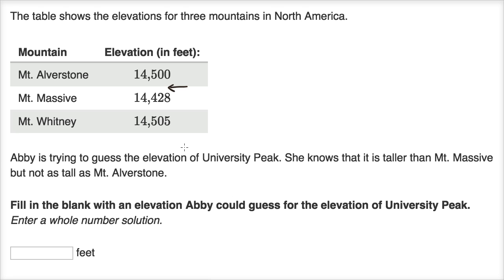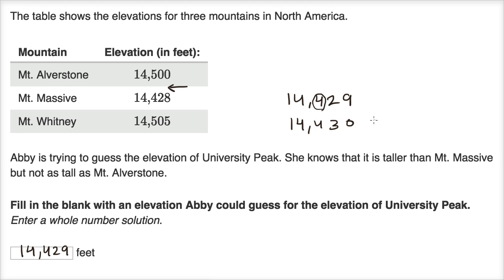Fill in the blank with an elevation Abby could guess — enter a whole number solution. We need a number larger than 14,428 and smaller than 14,500. One possibility is to add one to Mount Massive: 14,429. That's taller than Mount Massive but not as tall as Mount Alverstone, since it still has fewer hundreds than Alverstone. We could also write 14,430 and keep going all the way to 14,499 — any of these whole numbers would be acceptable answers.